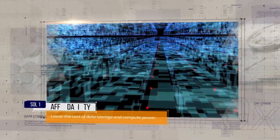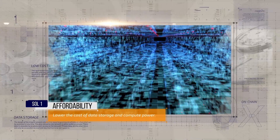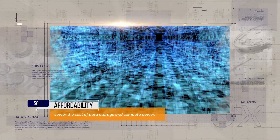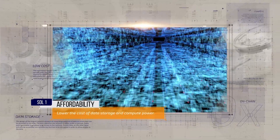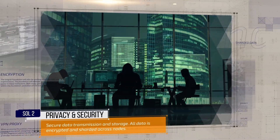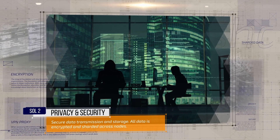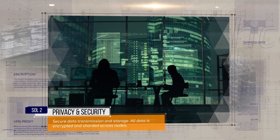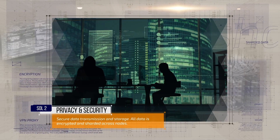Unigrid can lower the cost of data storage and compute power by utilizing the resources on the network grid nodes and data centers across the globe. All data on the network is encrypted and sharded across nodes. When accessing the ordinary internet via the Unigrid network, a connection is made via a locally running proxy server, and the data being sent is anonymous and encrypted.